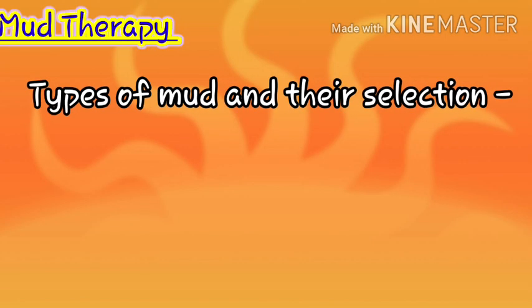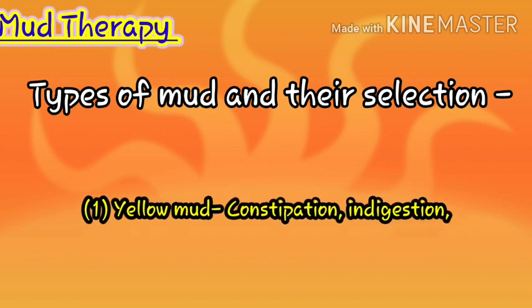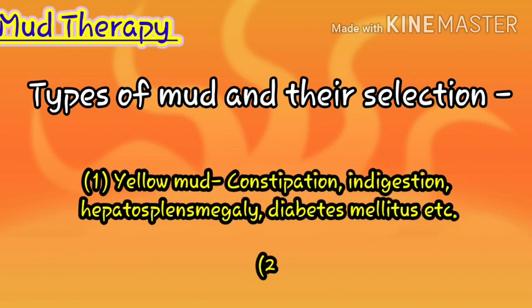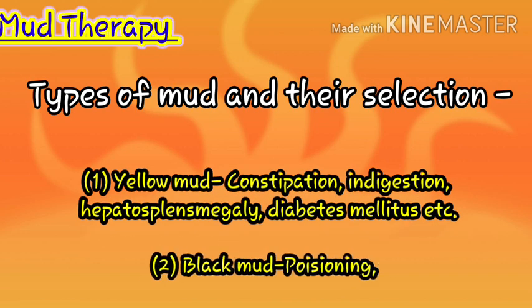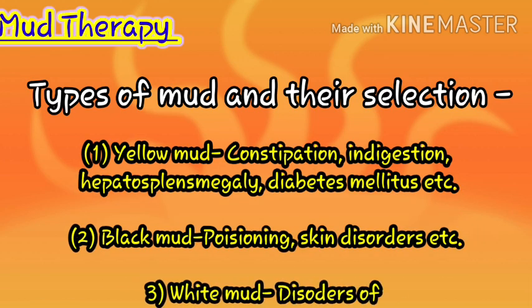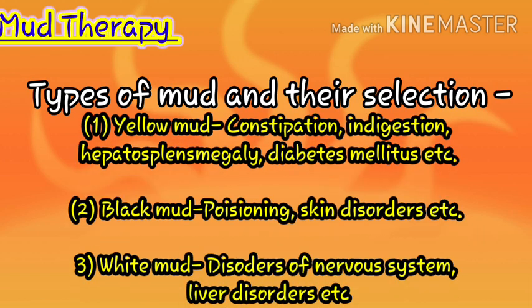Now let's talk about mud therapy and the selection of mud type by disease. Yellow mud is used for constipation, indigestion, hepatitis, splenomegaly, diabetes, and malaria. Black mud is used for poisoning and skin disorders.